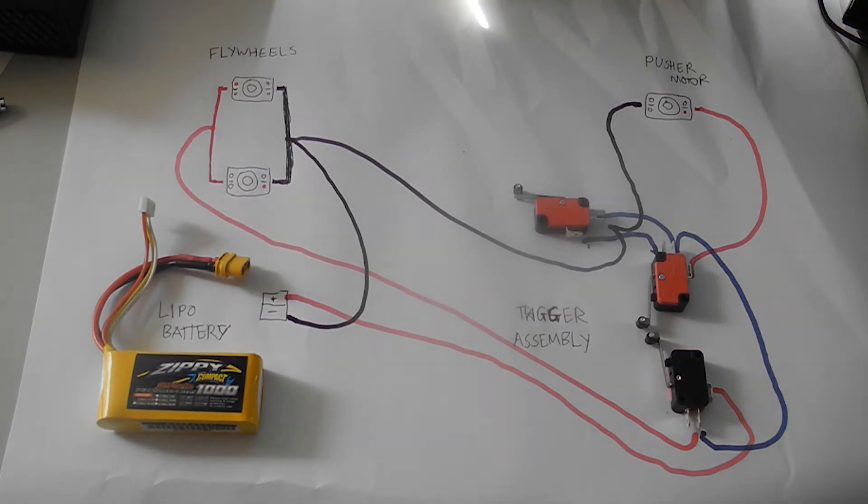With this setup, the flywheels must be turned on in order for the blaster to operate, thus stopping any accidental jams caused by supplying power to the main trigger into stationary flywheels.